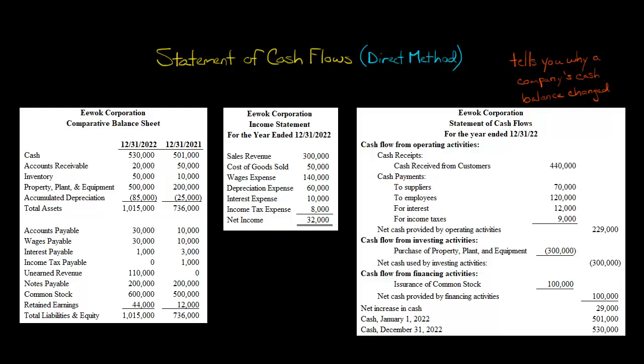There are going to be three sections, and this is the same whether you do indirect or direct — there are always three sections. You've got cash flow from operating activities, which is the company's main business: buying and selling inventory, providing services, wherever its main core business is. Then you have cash flow from investing activities — that's buying and selling productive assets, such as property, plant, and equipment, or long-term investments like available-for-sale securities.